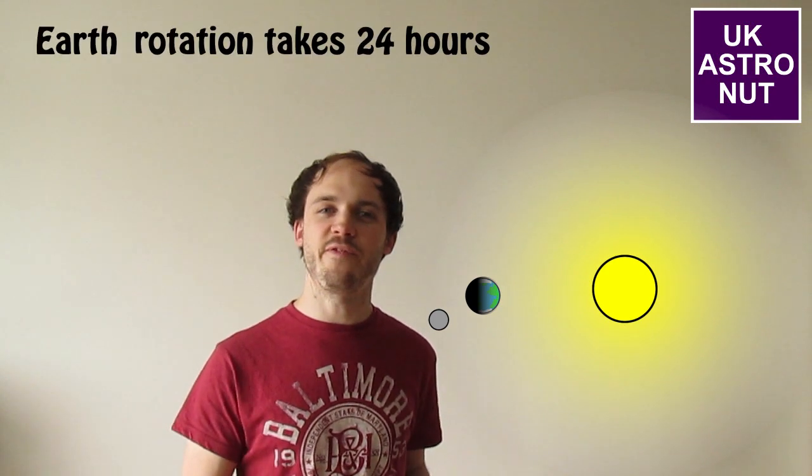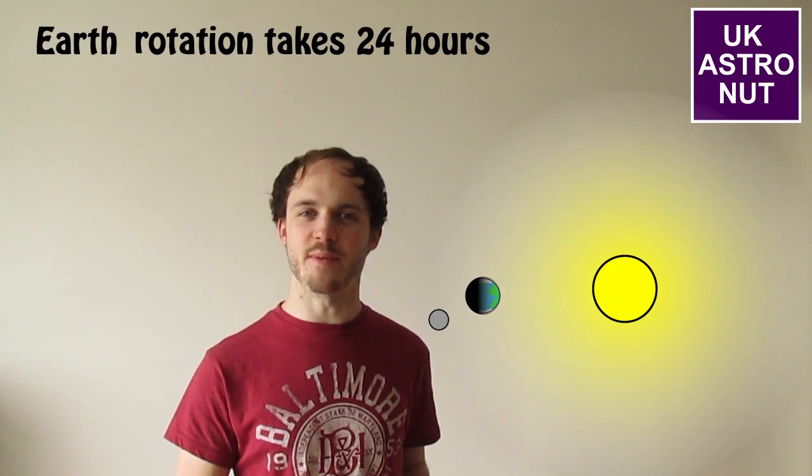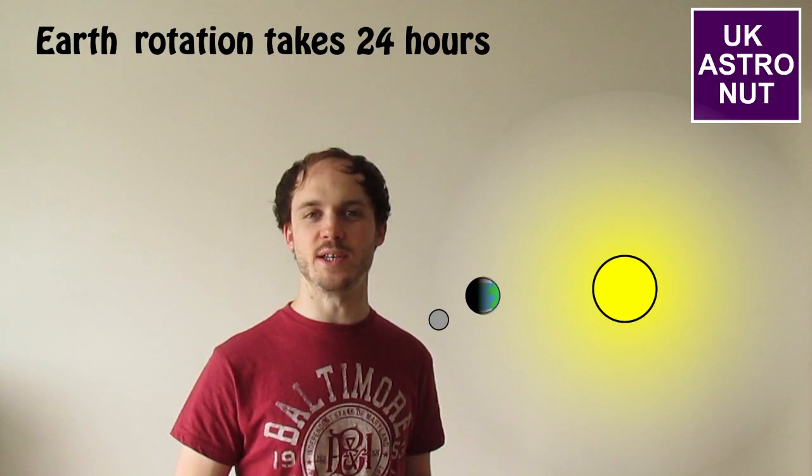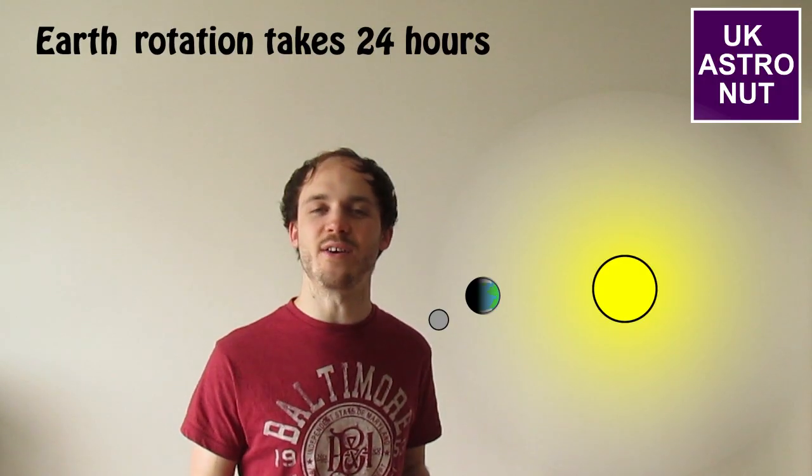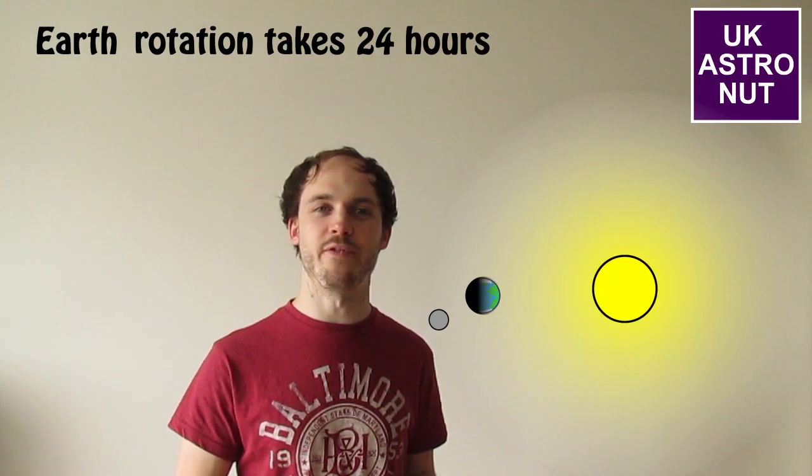We can see the sun when we're on the side of the Earth that's facing towards it. It takes 24 hours for the Earth to make one rotation, which is why a day on Earth lasts 24 hours.